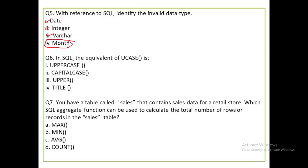In SQL, the equivalent of UCASE is the UPPER function. Whatever string you pass into UCASE, it converts it to uppercase. The UPPER function performs the same operation — both UCASE and UPPER convert a string to capital letters.